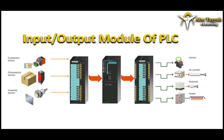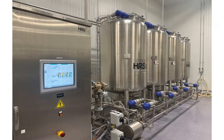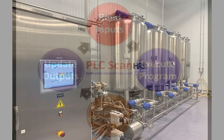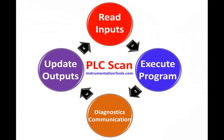After processing the logic, the PLC updates the status of digital and analog outputs based on the programmed instructions. This in turn controls the connected devices and influences the industrial process. The PLC continuously repeats this scanning and execution process in a cycle to ensure real-time control of the industrial process.